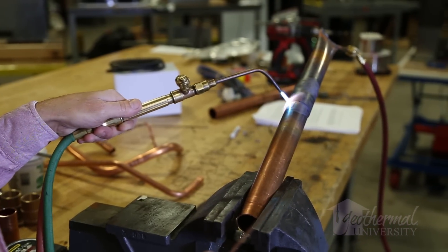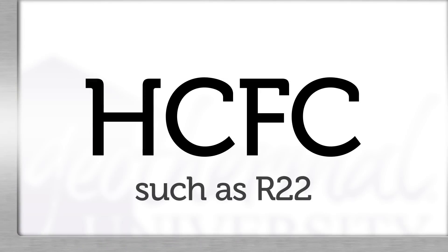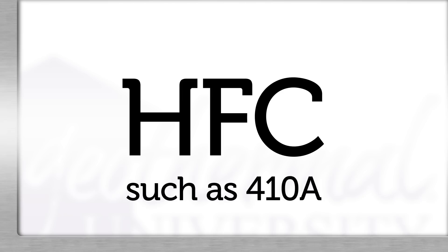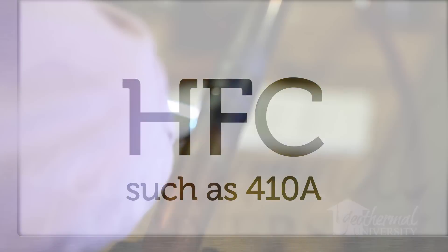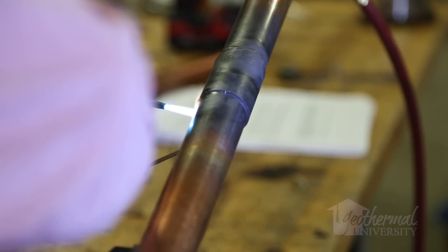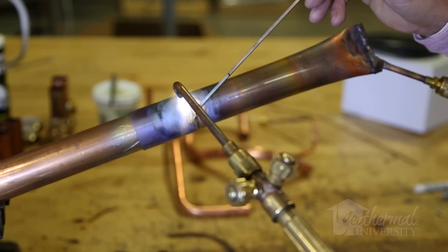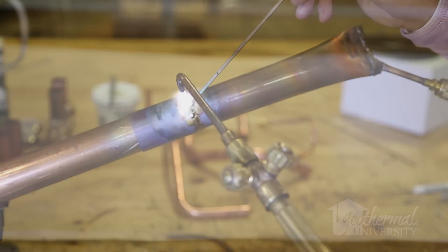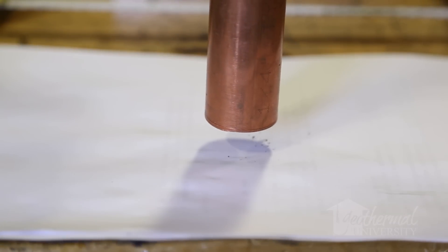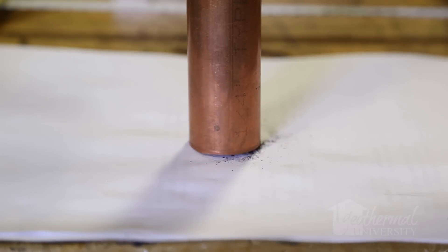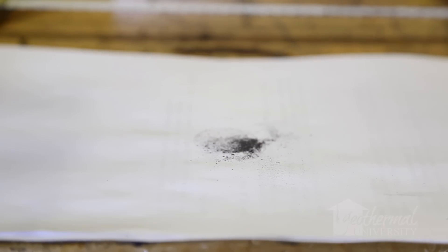It has become more important with the change from HCFC refrigerants like R22 that use mineral oil, to the new HFC refrigerants such as 410 using PoE oil. Due to the polar nature, PoE oils have a solvent effect and can scrub the copper tube walls. Oxide from tube walls and loose scale can circulate through the system.